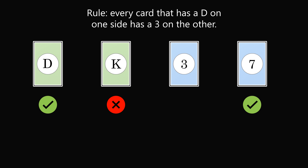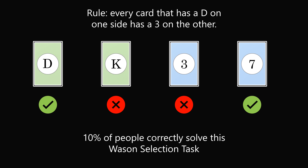You do not need to check the K card or the 3 card. If you didn't solve this, don't worry — you're in good company. Only about 10% of people correctly solved this. This task was developed in the 1960s by the psychologist Peter Wason. The Wason selection task has been replicated thousands of times in the decades following, and still only about 10% of people correctly solve it.